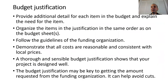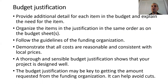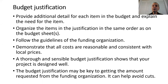Now that we've considered the budget — the items you need to pay for to make your program work — you need to develop a justification for why each of those items or expenses is necessary. You need to provide additional information and detail for each item in the budget and explain the need for it. The list of items in the justification should be in the same order as on the budget sheet to make it easier for reviewers, and you should follow the guidelines of the funding organization. The budget justification shows that your project is well designed, and it may be key to getting the full amount requested, making it harder for them to make cuts.